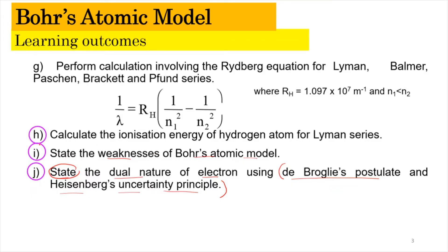For the learning outcomes H, I, and J, we're going to look at those in Part 4 of the video, which is this video. Meanwhile, for the learning outcome G, we have looked at that in Part 3, which is the previous video. So without any further ado, let's start with Part 4 of the video.